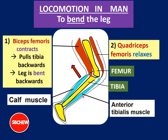The calf muscle is found in the lower part of the leg at the back. When it contracts, since it is attached to the heel of the foot, it pulls the heel upward and the foot straightens to the back. In doing so, it presses on the ground, and the ground pushes back with an opposite reaction, providing the force for the person to move forward.